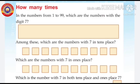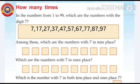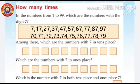The numbers with digit 7 are: 7, 17, 27, 37, 47, 57, 67, 77, 87, and 97. Then 70, 71, 72, 73, 74, 75, 76, 77, 78, and 79.